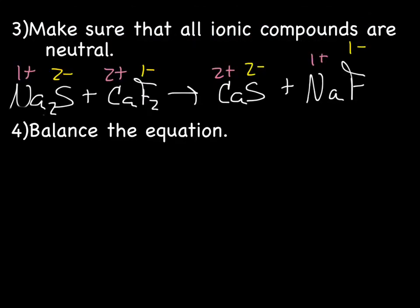Next step. Make sure that the ionic compounds are neutral. All of the answers are going to be ionic compounds. So, you've got to check to make sure they're neutral. So, Ca is 2 plus. S is 2 minus. So, they're neutral. So, we can get rid of those. And, Na is 1 plus. F is 1 minus. So, they're neutral. So, we can get rid of all these charges now.